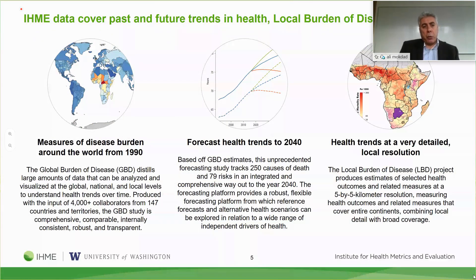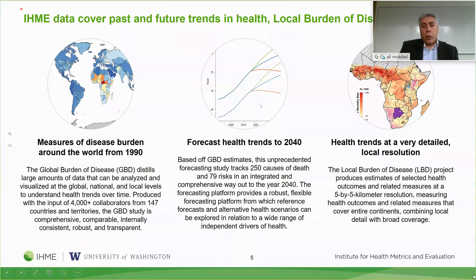Briefly, some of our products that we produce here at IHME: the first is the Global Burden of Disease. The second is what we call future health scenarios, where we take the burden of disease and project it to the future—showing a normal projection, what will happen in a better-case scenario where life expectancy increases, and what happens if a country performs at a certain indicator, such as where diabetes would be in 2040 if obesity goes down by 5%.